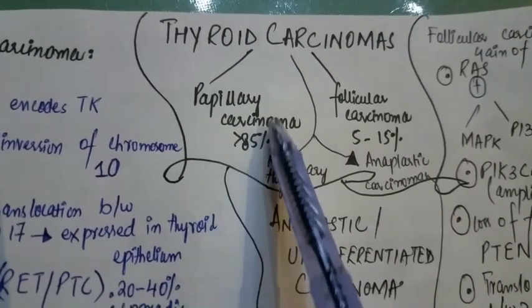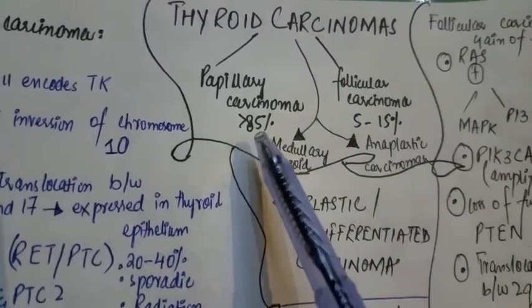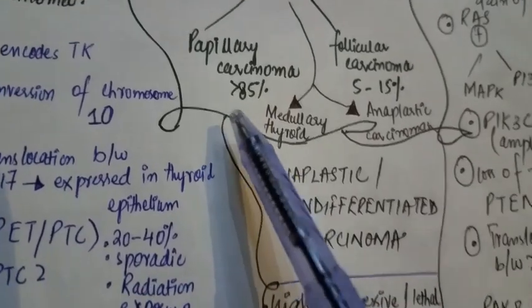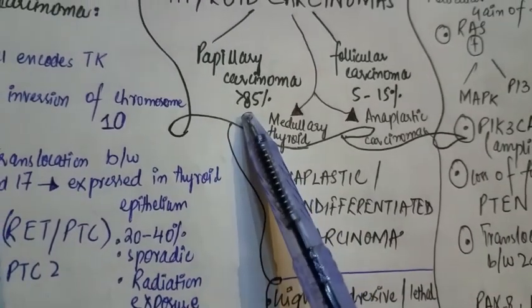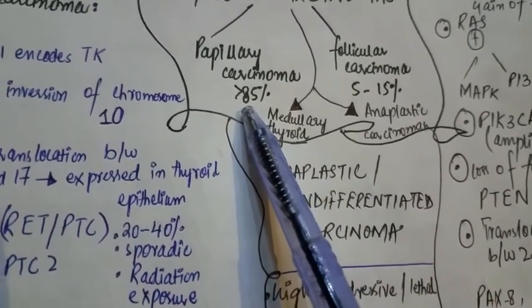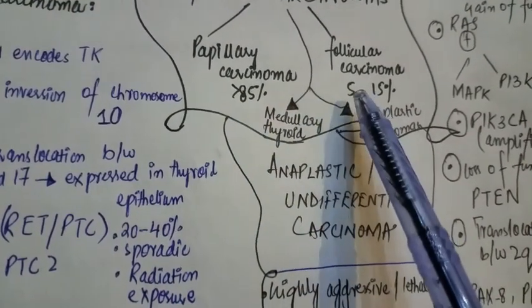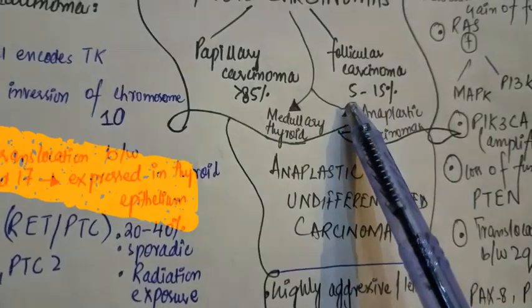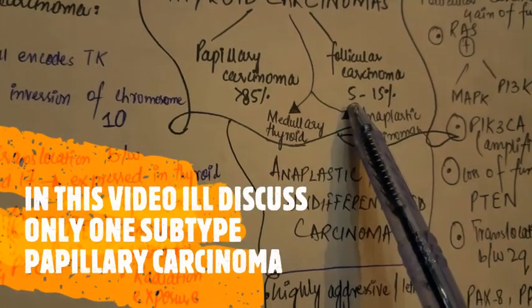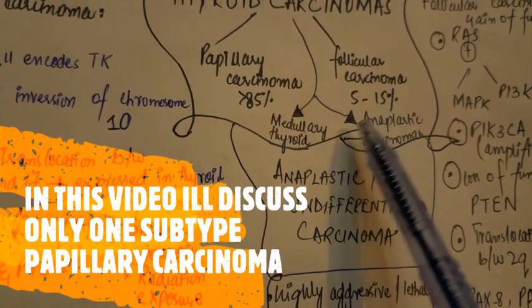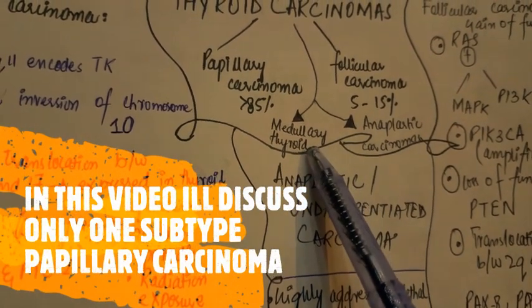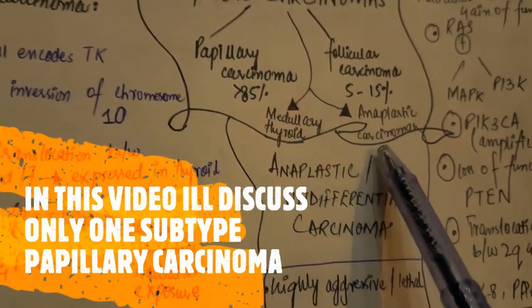The topic for today is thyroid carcinoma. There are four types of thyroid carcinoma: papillary carcinoma, which is present in 85% of cases; follicular carcinoma, which is present in 5 to 15% of cases; medullary thyroid carcinoma; and anaplastic carcinoma.